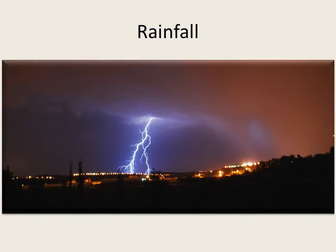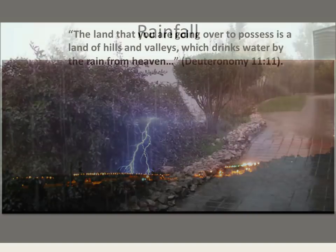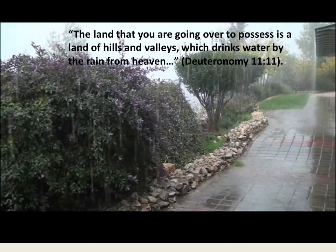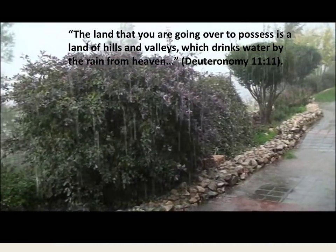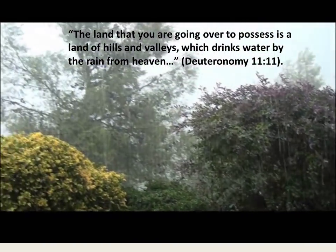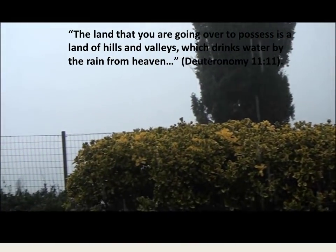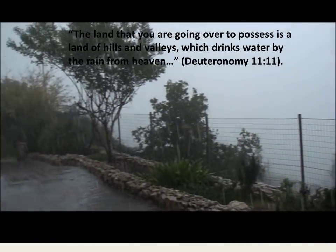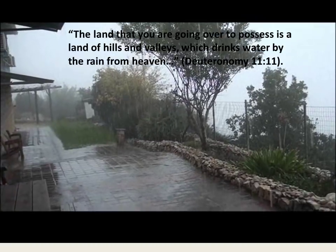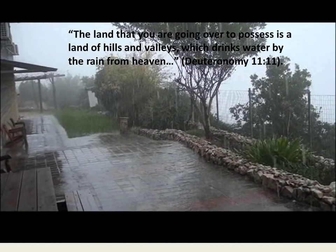Let's see winter rainfall in the hill country of Judah, near Jerusalem. Israel has no major river that grants a continuous supply of water. Rather, as Deuteronomy 11 says, it is a land dependent on God's yearly provision — a land that drinks rain from heaven.